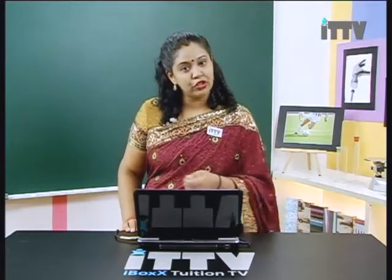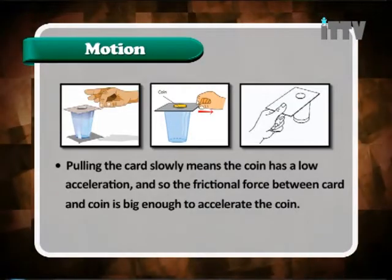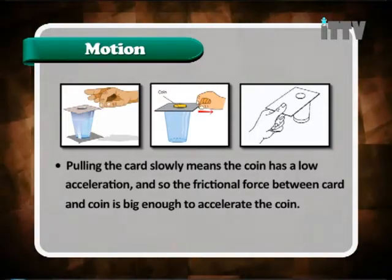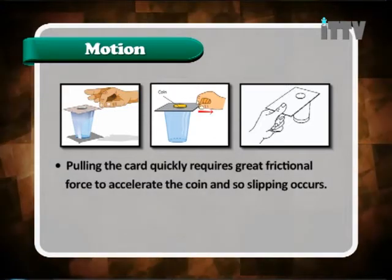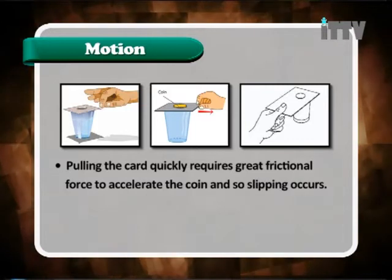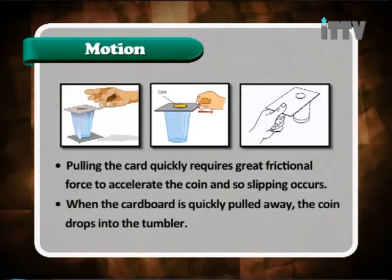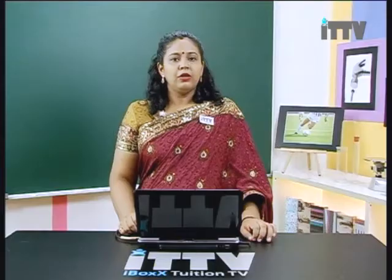We have seen two different situations — one pulling fast and one pulling slowly — and how the coin reacts in each case. Pulling the card slowly means the coin has a low acceleration, and so the frictional force between the card and the coin is big enough to accelerate the coin along. Pulling the card quickly requires a great frictional force to accelerate the coin, and so slipping occurs. When the card is quickly pulled away, the coin drops into the tumbler.